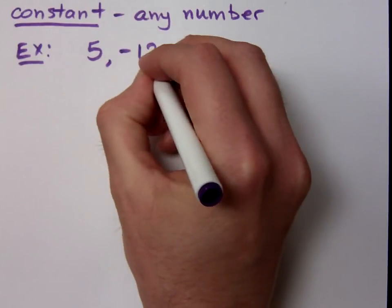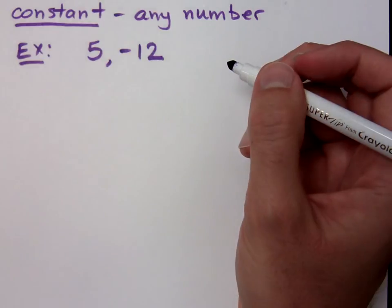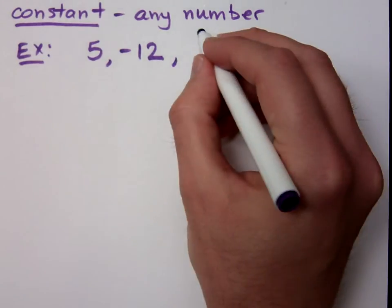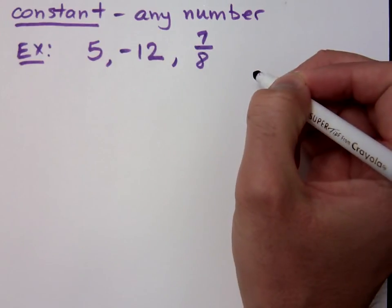If I have negative twelve, that again is a constant, it's a negative number, but negative numbers can be constants. Even your favorite guys, fractions, aren't those constants as well? Yeah.